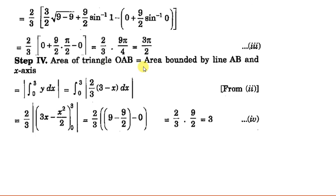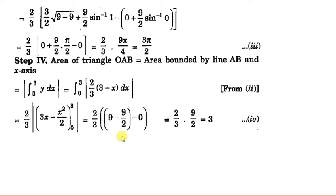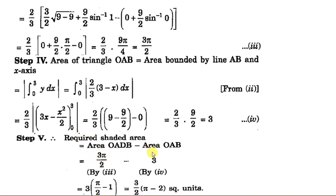Now the area of triangle OAB — the area bounded by the line and the x-axis. The limits are again 0 to 3. Here Y comes from the line equation: y = (2/3)(3 − x). Integrating: (2/3) × [3x − x²/2] from 0 to 3. Substituting: (2/3) × (9 − 9/2) = (2/3) × (9/2) = 3. So the area under the line is 3. Subtracting: the shaded area = 3π/2 − 3 = (3/2)(π − 2) square units.